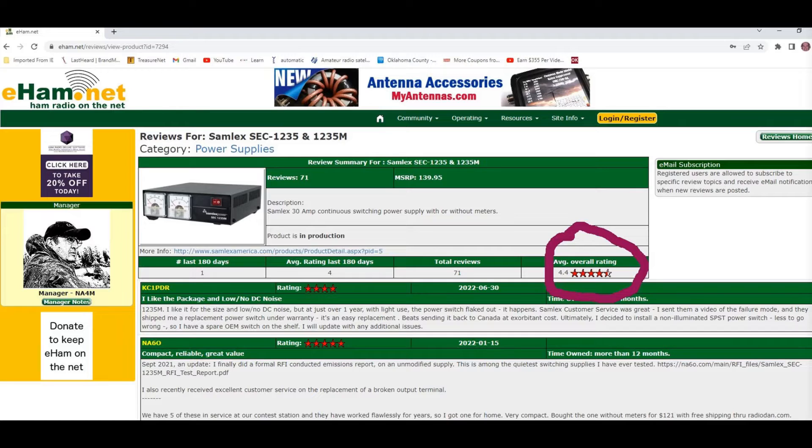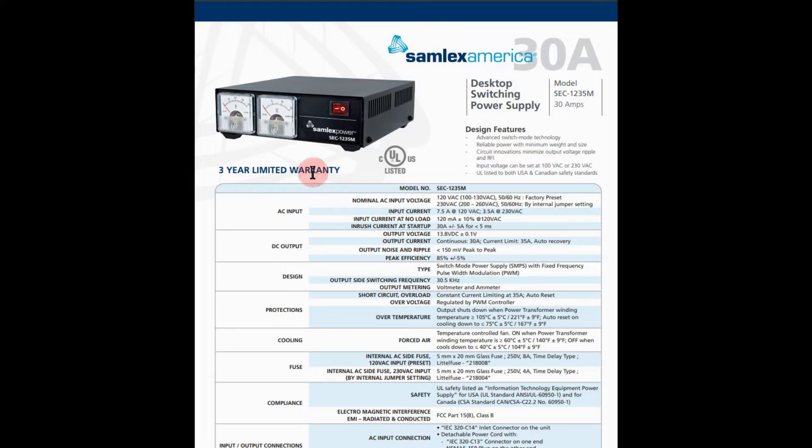A lot of times one of the first places I look when it comes to ham radio attachments or accessories is eham. If you notice it has a 4.4 rating out of 5 and I thought that was pretty good. The prices on these have come up considerably, I guess probably because they can't get the electronic parts or something, but it's come up quite a bit from this price here.